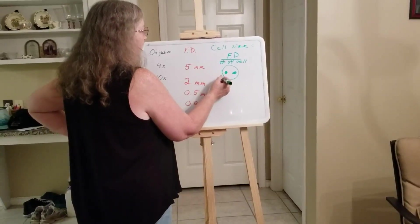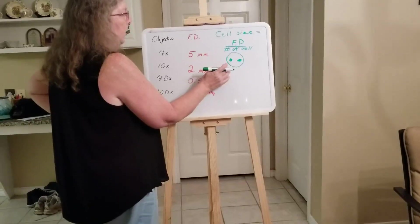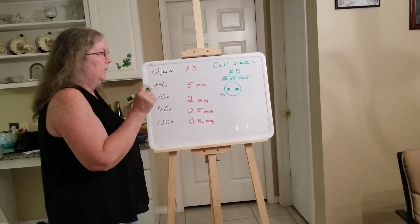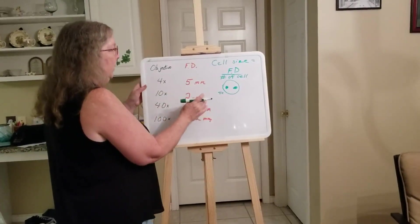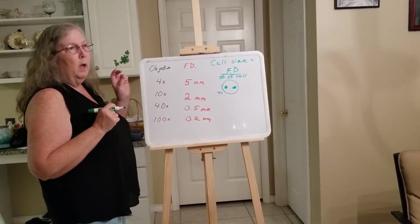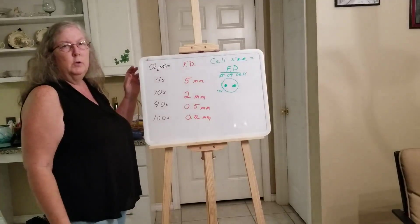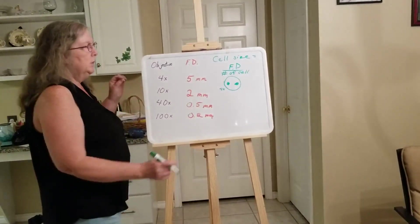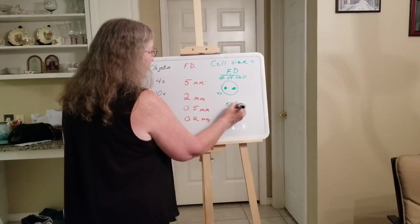...and they may either tell you 4x meaning the objective lens, or they may specify the total magnification. Make sure you read what it's saying. So with this 4x, total magnification would be 40, told you here that the field diameter is 5. If I asked you, this is what you see, how big are each of those cells? How big is an individual cell?